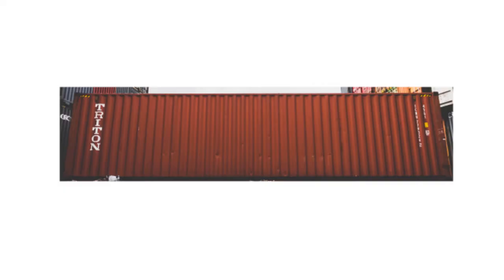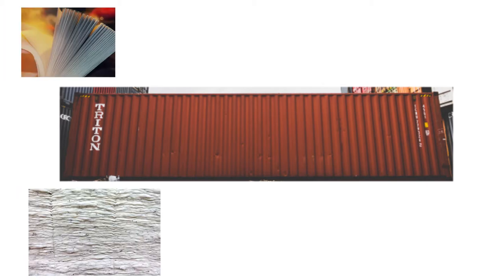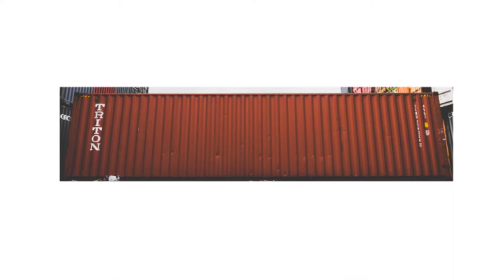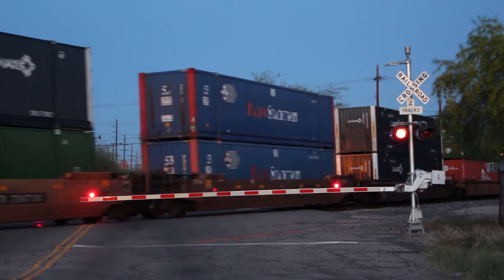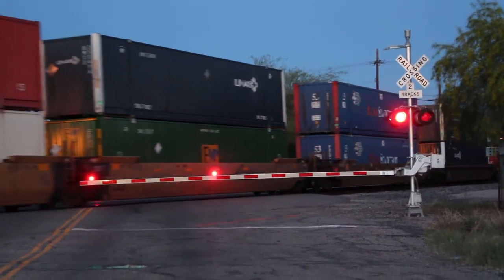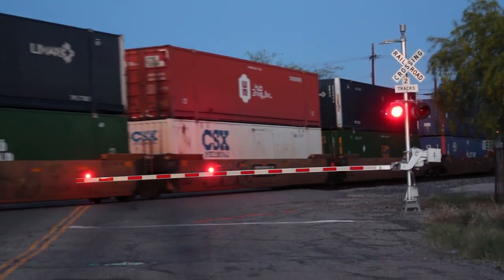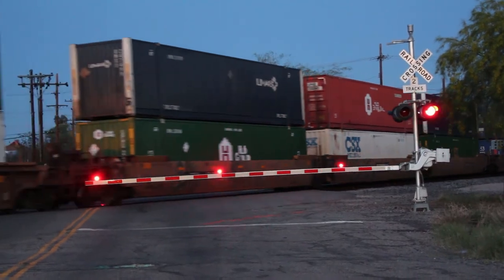Shipping containers are used to store all the goods transported on container ships. These shipping containers can hold anything from sugar, paper, and cotton to metals, machinery, and steel pipes. The dimensions of these shipping containers are standardized by the ISO, to make sure that a shipping container can be used in any part of the world and on any shipping vehicle without any problem.